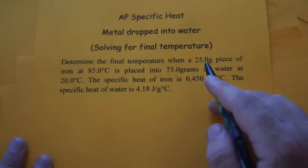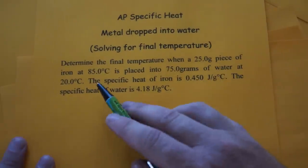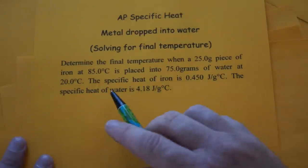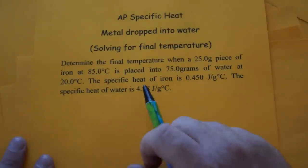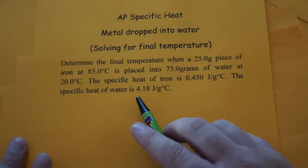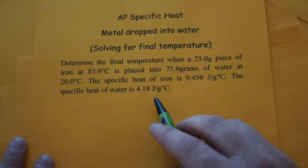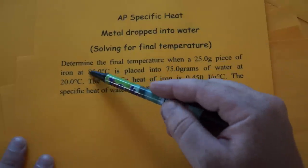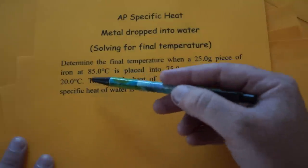Determine the final temperature when a 25 gram piece of iron at 85 degrees Celsius is placed into 75 grams of water at 20 degrees Celsius. The specific heat of iron is 0.45 joules per gram degree Celsius and the specific heat of water is 4.18 joules per gram degree Celsius. Now you have to know that our temperature better come out between these two because we're putting something hot and something cold together.